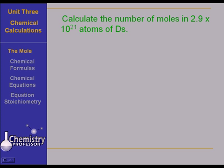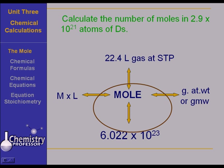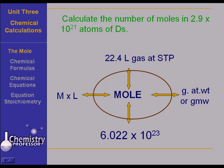How about calculating the number of moles in 2.9 times 10 to the 21st atoms of dysprosium? Wow. Let's see. We're starting with numbers of things, so we're down here at this point in the mole roadmap. And we've got to go from here to moles. How do we do it?